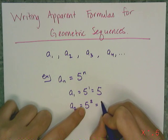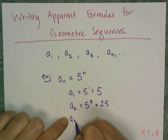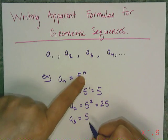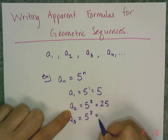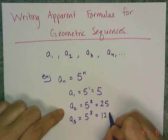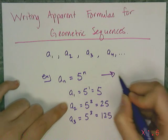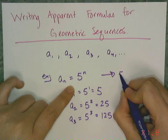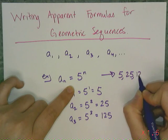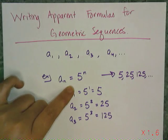A sub 2 is going to be 5 squared, so that means it's 25. And the third term, to find a third term, I'm going to change that n to a 3, because I'm looking for the third term, and I get 125. So the sequence generated by this apparent formula is 5, 25, 125, dot dot dot, or the powers of 5.